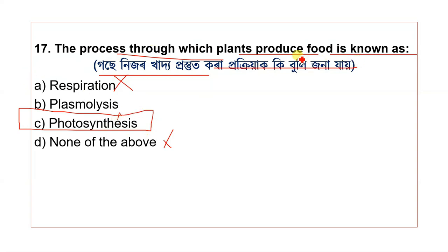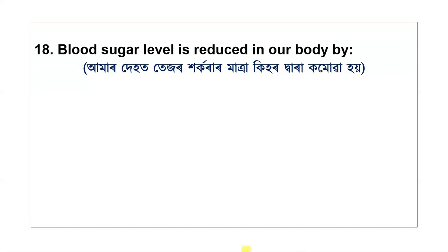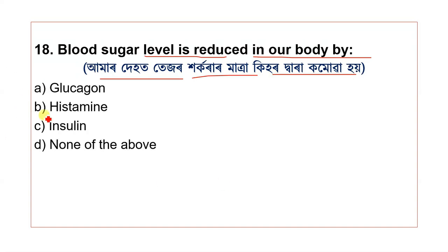Question 18: Blood sugar level is reduced in our body by which substance? The options are glucagon, histamine, insulin, and none of the above. The correct answer is insulin, which is important for diabetic patients.